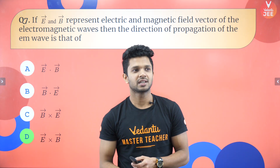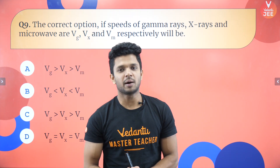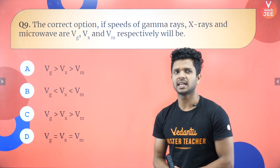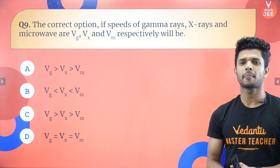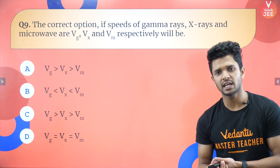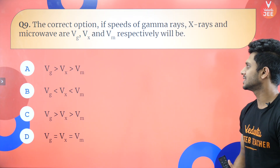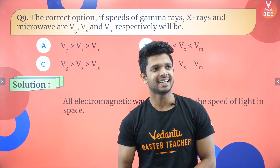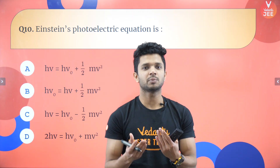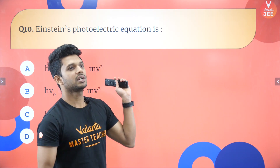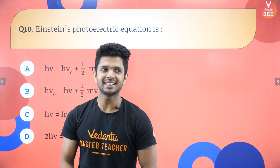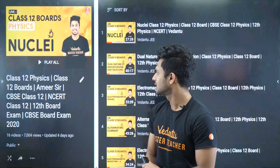Question eight: the speed of gamma rays, X-rays, and microwaves — what is the relationship? All electromagnetic waves travel at the same speed in free space: 3 times 10 to the 8 m/s. So vg equals vx equals vM. Einstein's photoelectric equation: h nu equals work function plus kinetic energy, i.e., h nu equals h nu naught plus half mv squared.